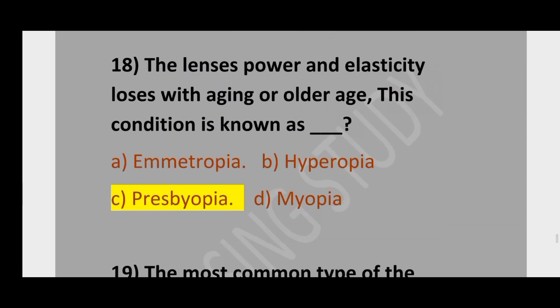Question number 18. The lens power and elasticity are lost with aging or older age. The condition is known as: option A, ametropia; option B, hyperopia; option C, presbyopia; option D, myopia. The correct option is presbyopia.